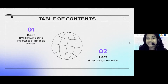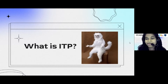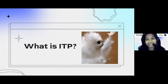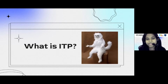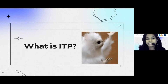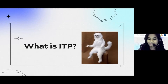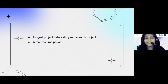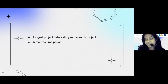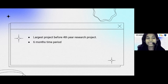So what is ITP? I hope everyone of you are aware about this ITP module. If not, ITP is a module you will get in your second year second semester. It's a project you have to do within six months — actually less than six months of time period. It will be the largest project before your final year research project.